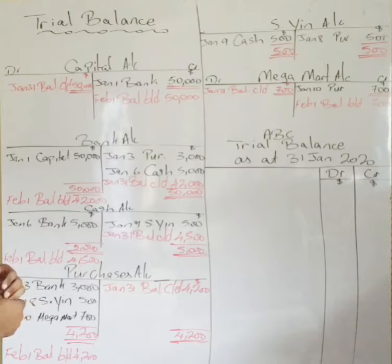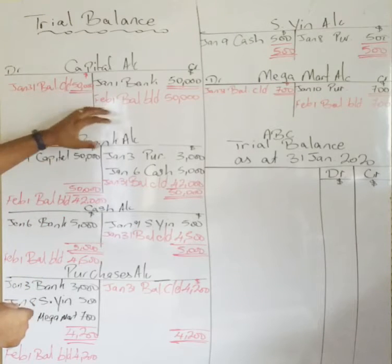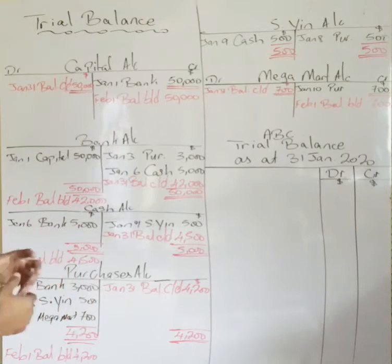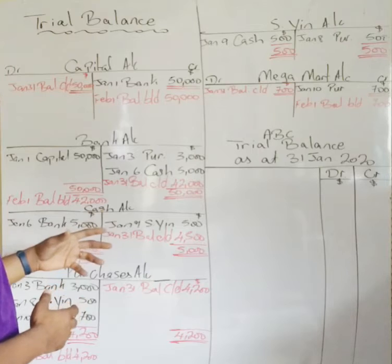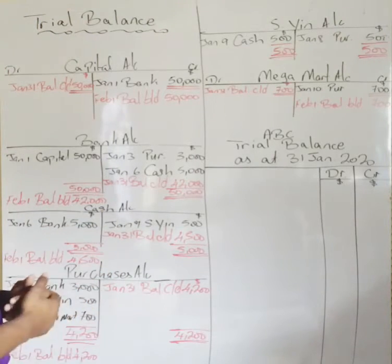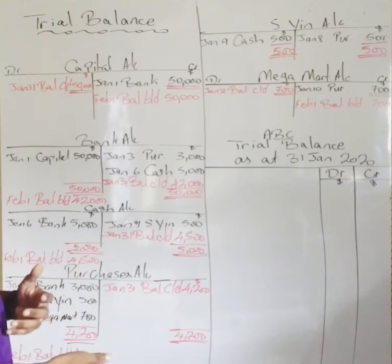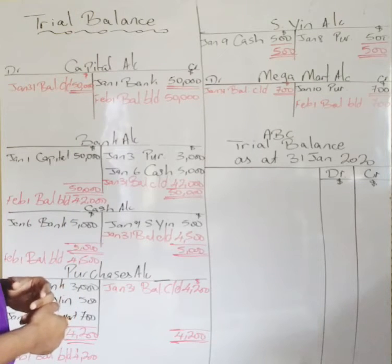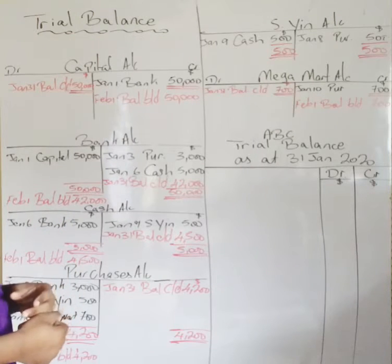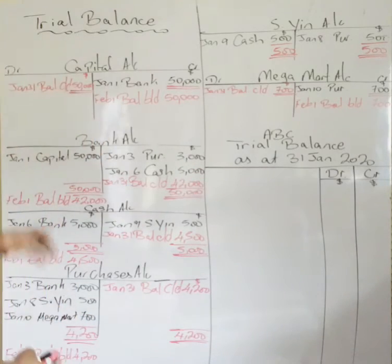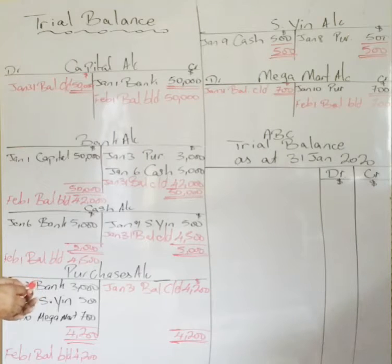We have learned how to balance off double entry accounts, and you can see my balancing principles highlighted in red. This is a simple trial balance that I'll be working through — the principle remains the same whether it is simple or complex. The aim is for you to understand the basic principle of how to extract, as they call it, a trial balance.